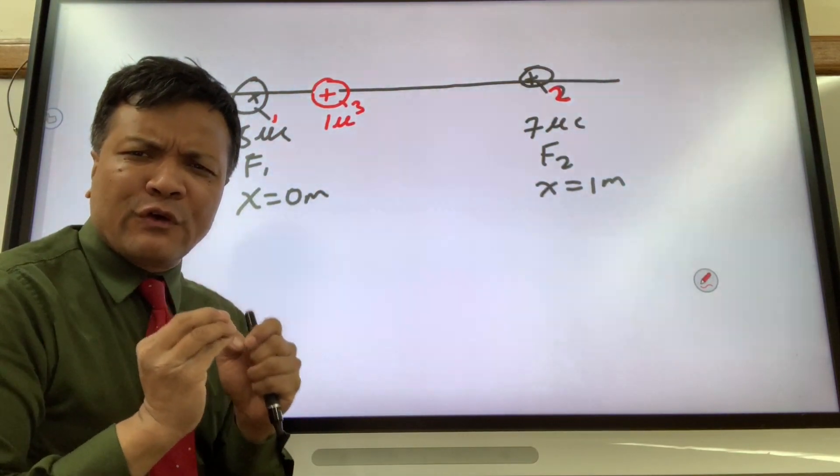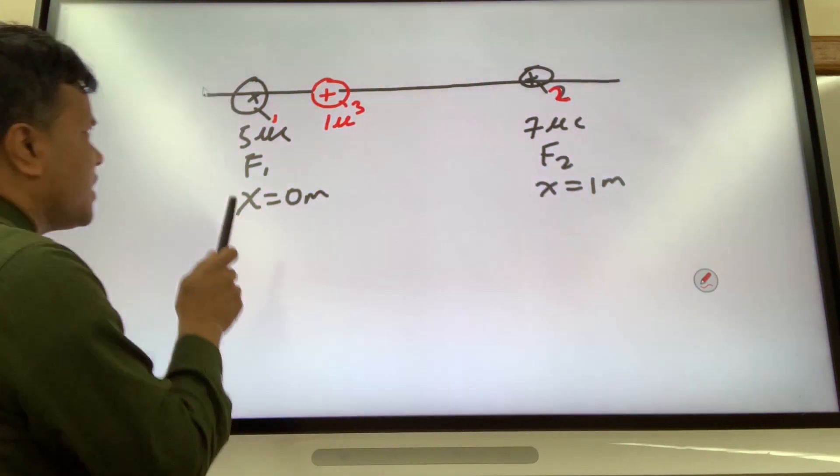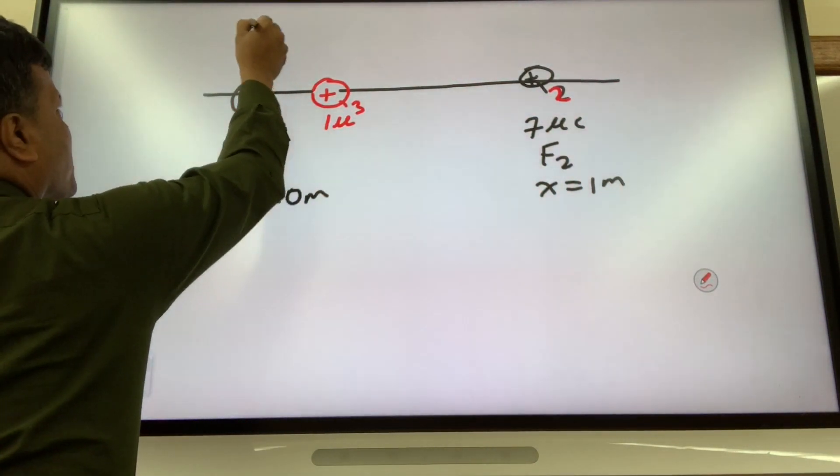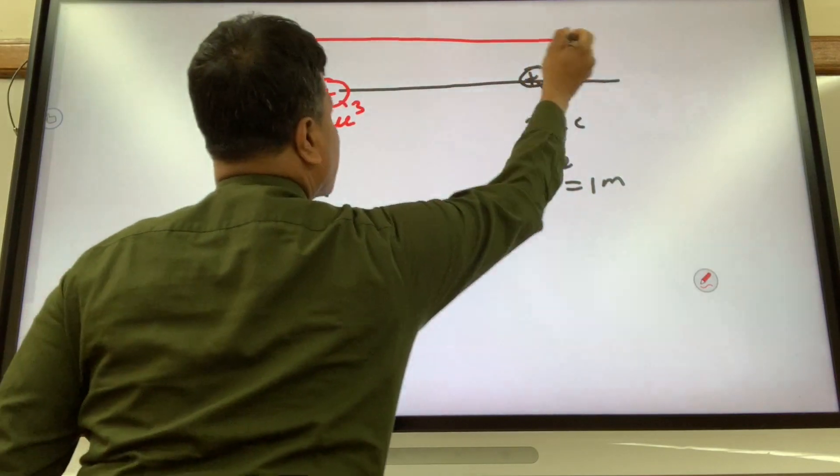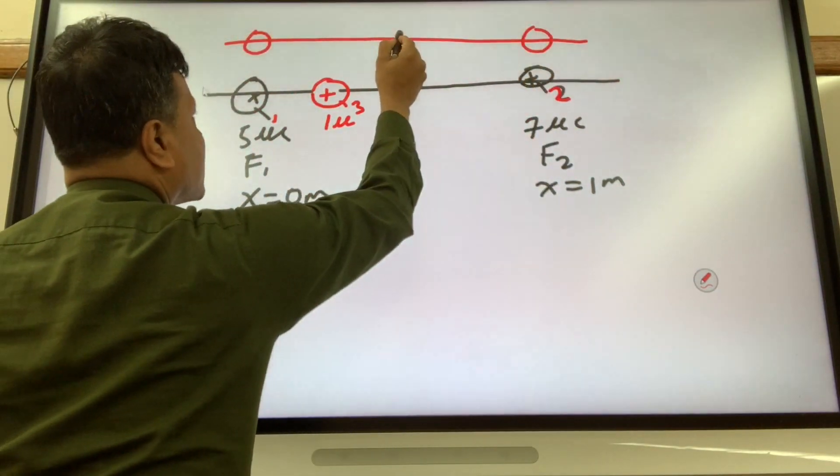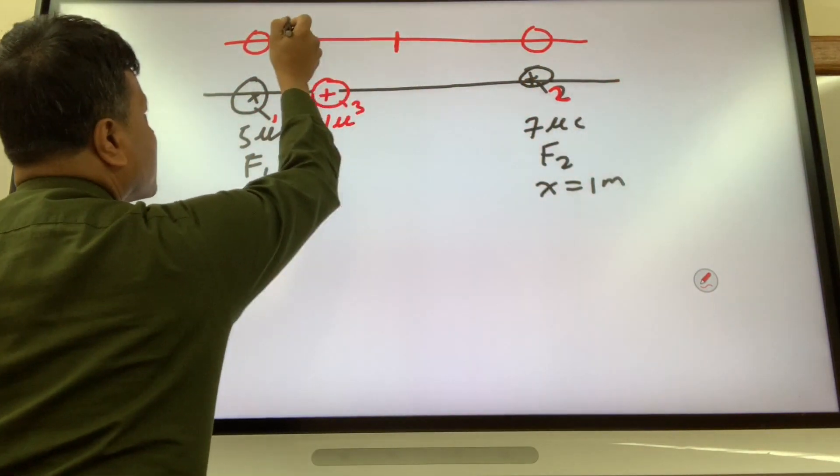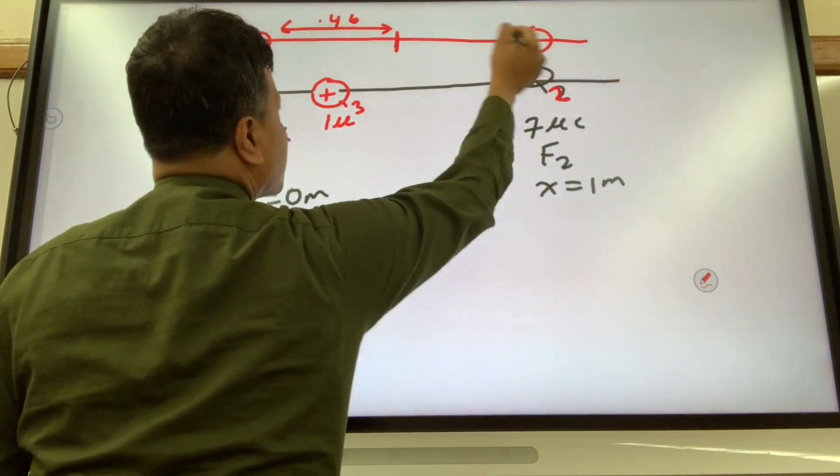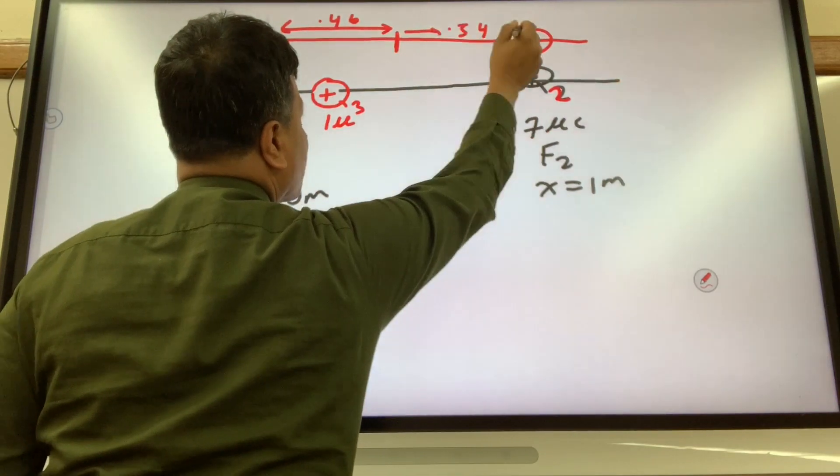This is the equilibrium right here, because the distance from here to here is 0.46 meters and distance from here to here is 0.54 meters. So let's see whether that happens.